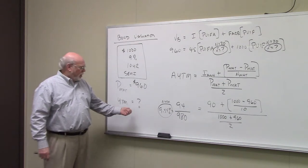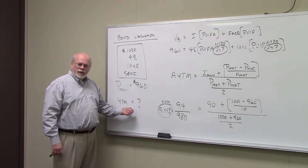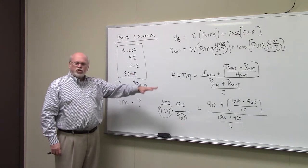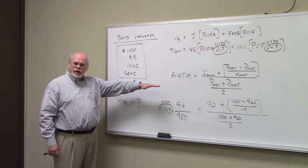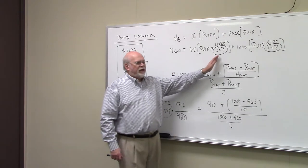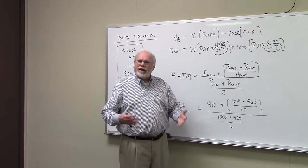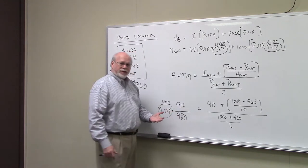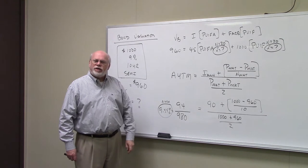Just so you know, the yield that we use here is an interpolated yield. We're going to show you the first step here, and then we'll finish up the problem in the next video. As a student, you need to understand there's no way to directly calculate an interest rate here — you could try, but it would just be a trial and error procedure, and that takes a long time to get the correct answer. The first thing I'm going to show you is how to calculate what's called the approximate yield to maturity.